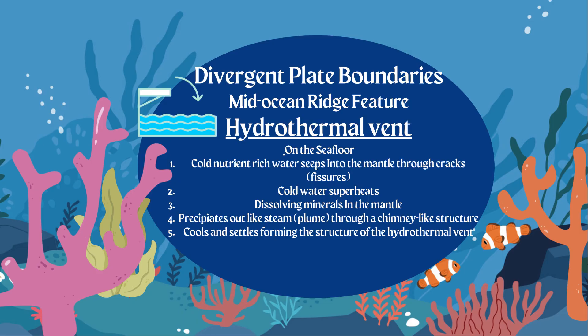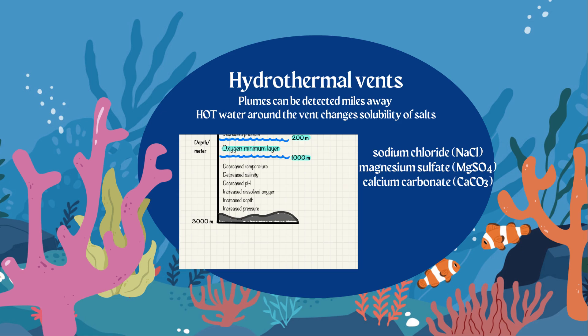Because the deep ocean is cold, the steam coming out of the hydrothermal vent will cool and settle, forming the hydrothermal vent chimney structure. These vents are in the deep ocean, and their plumes can be detected by organisms miles away. The hot water around the vent changes the solubility of salts — sodium chloride, magnesium sulfate, and calcium carbonate — which is vital for deep-ocean life that depends on these minerals and the organic material around hydrothermal vents.